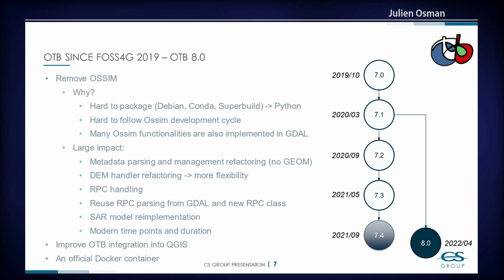We noticed we were only using about 40% of OSSIM's capabilities, and most of those were already provided by GDAL. The plan was to stop using OSSIM, route everything GDAL could handle through GDAL, and implement anything else directly inside the Orfeo Toolbox. This was a lot of work because the dependency was very pervasive throughout the code, but we managed to release OTB version 8 this year.